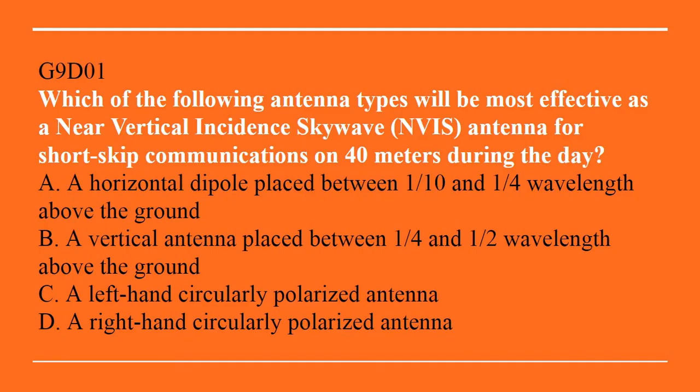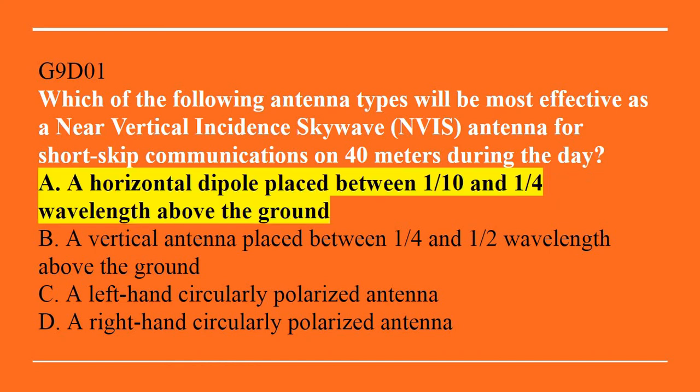G9D, specialized antennas. G9D01: Which of the following antenna types will be most effective as a near-vertical incidence skywave antenna for short-skip operations on the 40-meter band during the day? A. A horizontal dipole placed between one-tenth and one-quarter wavelength above ground. B. A vertical antenna placed between one-quarter and one-half wavelength above ground. C. A left-hand circularly polarized antenna. Or D. A right-hand circularly polarized antenna. The answer is A — a horizontal dipole placed between one-tenth and one-quarter wavelength above the ground.